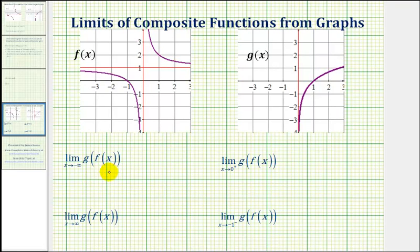We want to find the limits of the composite functions based upon the graphs of f of x and g of x. Our first limit is the limit as x approaches negative infinity of g of f of x. We'll start by considering what's happening to f of x, the inner function, as x approaches negative infinity.